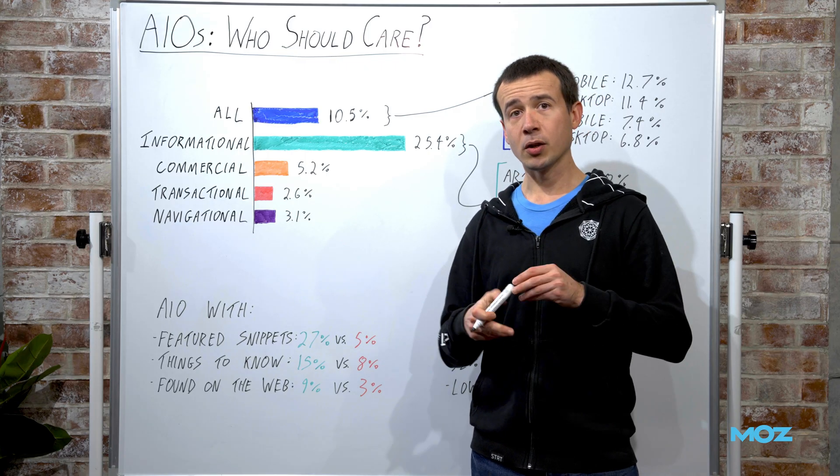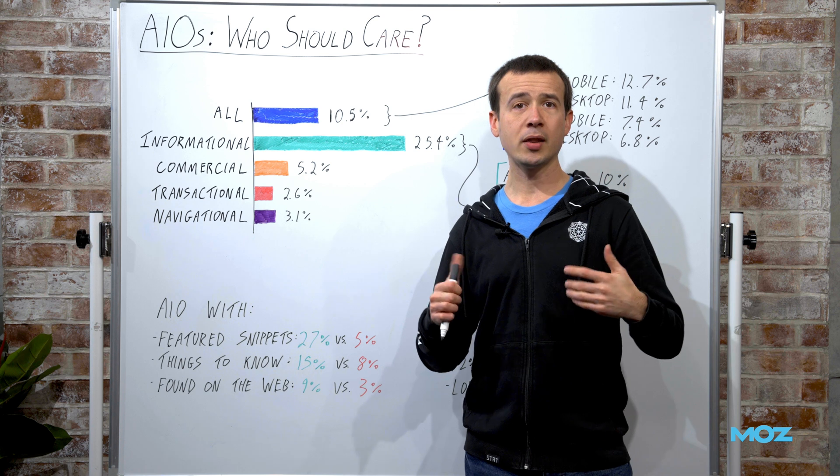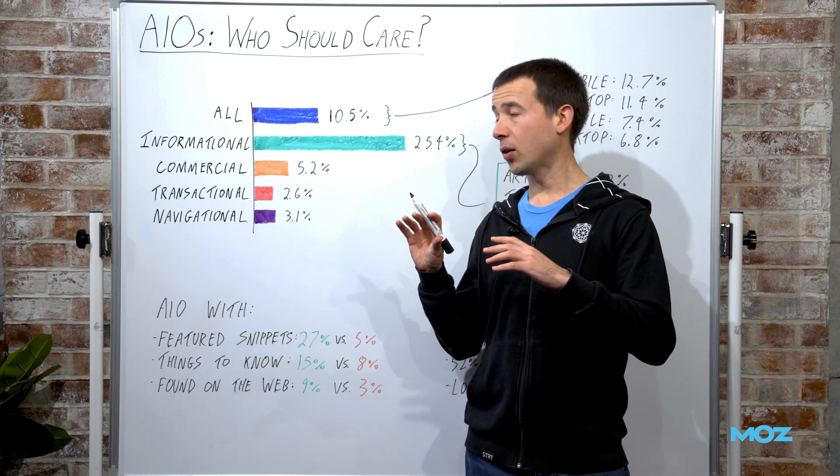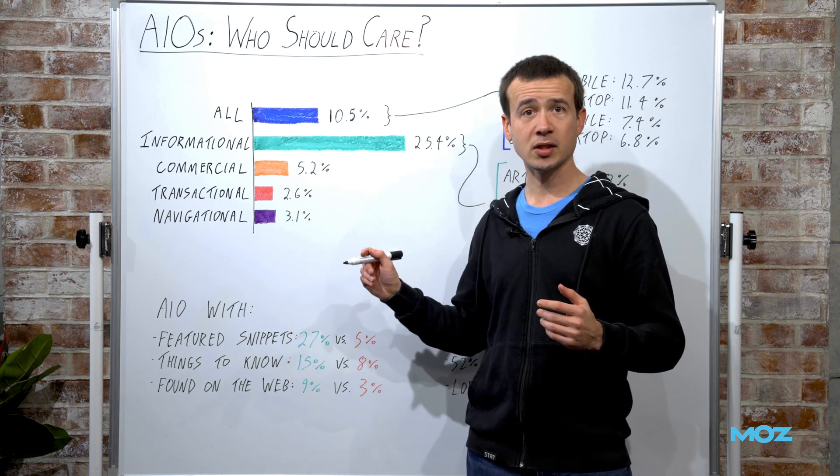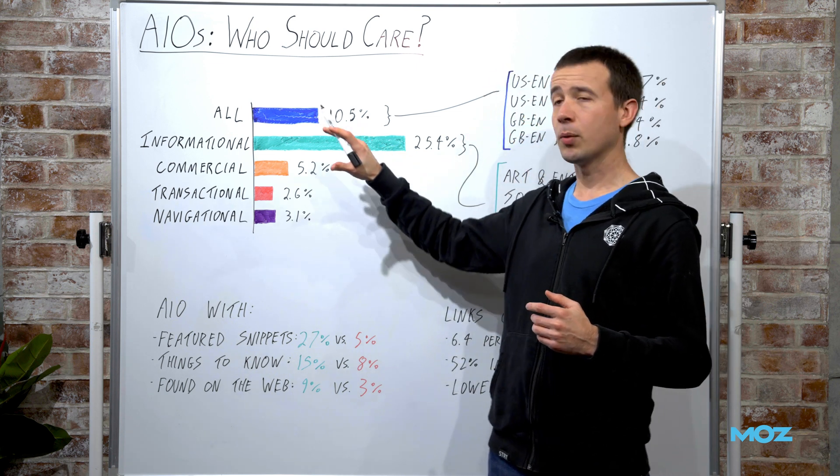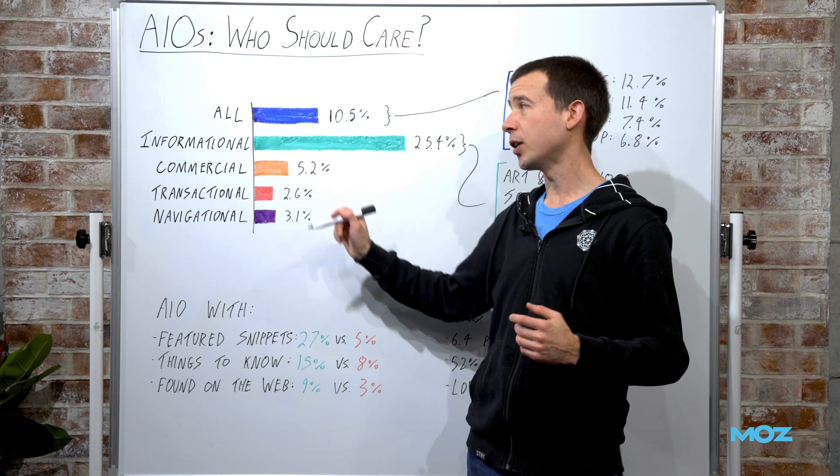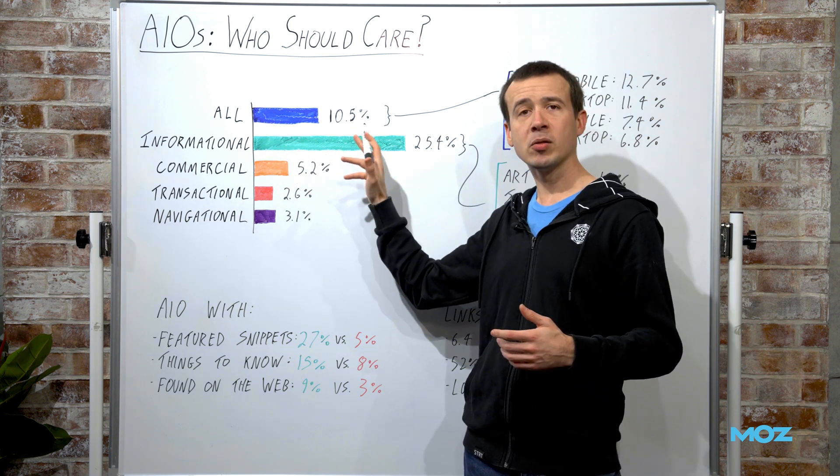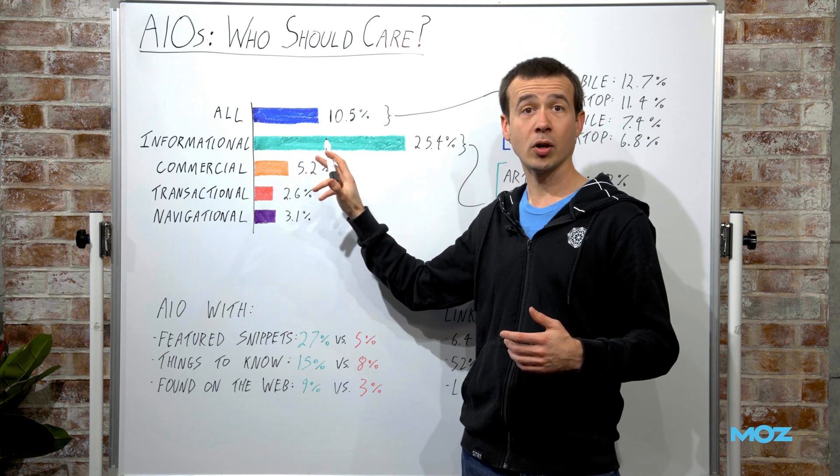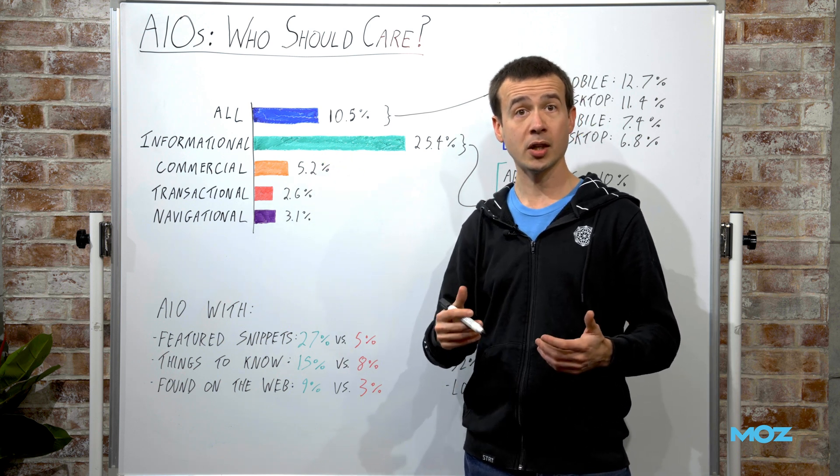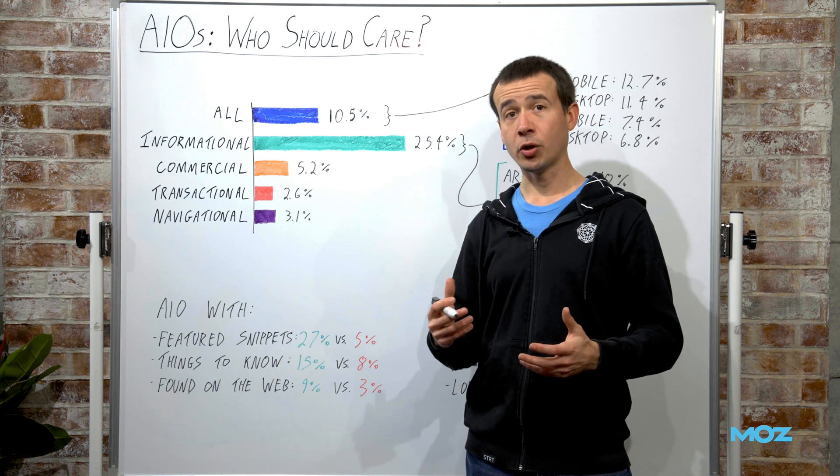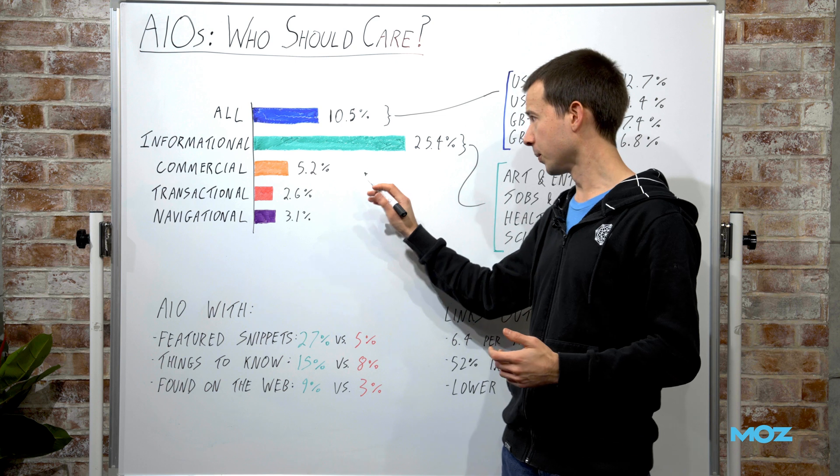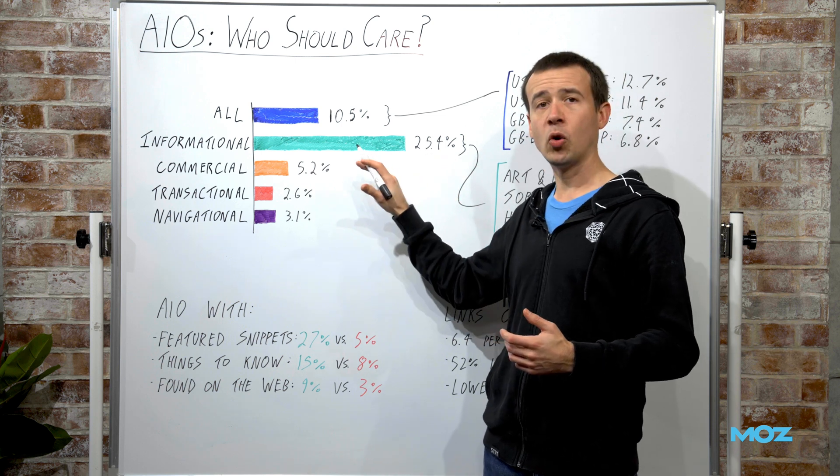The first thing I want to talk about is where these are appearing in the funnel. I'm looking at our intent API to contextualize this data and the percentage of keywords that have an AI overview for different intents. Overall, for all 46,000 keywords, it was about 10.5%. About one in ten keywords had an AI overview of some kind. However, the vast majority of those were for informational, top of funnel intent research keywords, far more than anywhere else.